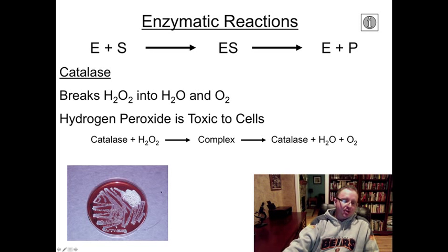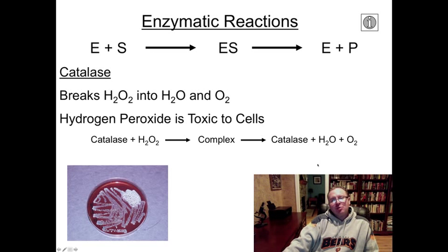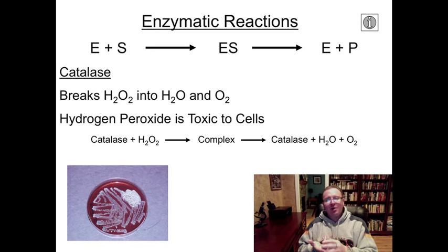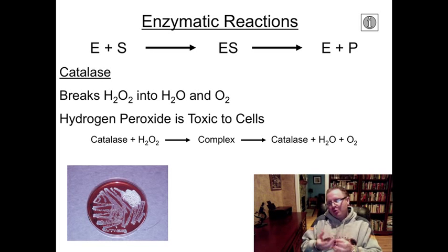This picture at the bottom shows a catalase reaction occurring with hydrogen peroxide in a petri dish. This is a type of agar called blood agar — a medium that contains blood and therefore the enzyme catalase. When you apply hydrogen peroxide to it, you can see the bubbling that occurs; that's the release of oxygen gas as the hydrogen peroxide breaks down. If you've ever had a cut on your finger and used hydrogen peroxide to clean it, you've probably noticed that same bubbling — because the catalase enzyme in your blood is breaking the hydrogen peroxide apart into water and oxygen, helping clean out that wound.